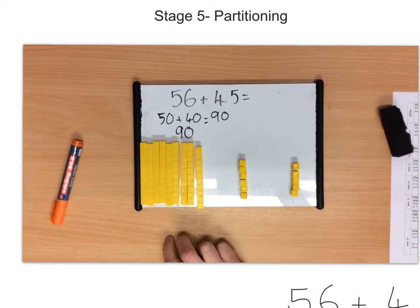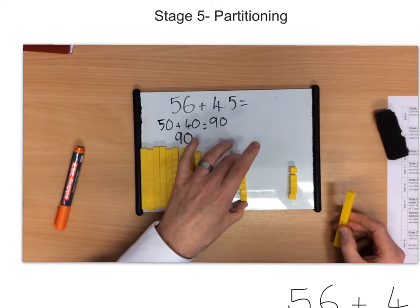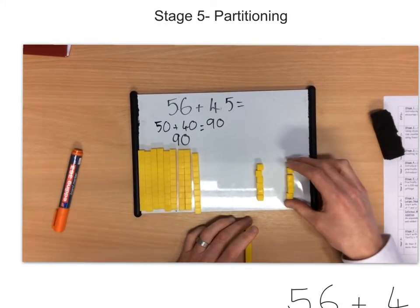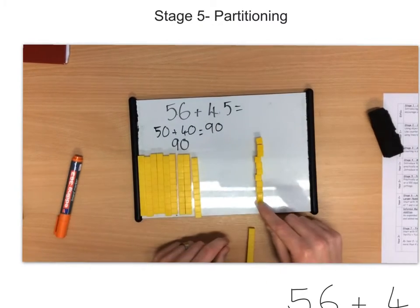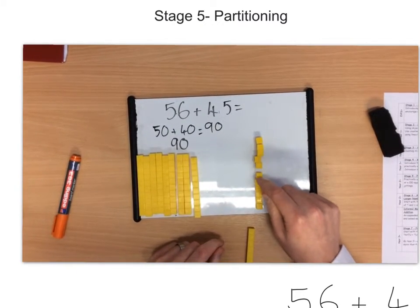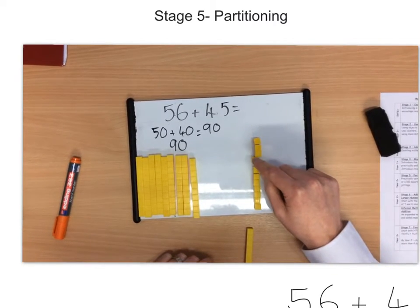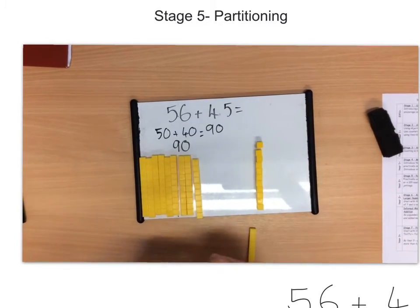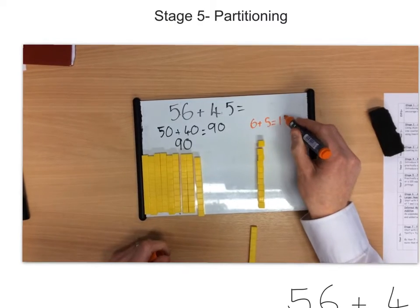What we always want to do is when we're adding numbers together, we want to try and work towards our multiples of 10. That always helps. So, if I get to my little cubes here, I know I've got 1, 2, 3, 4, 5, 6. So, really, I should have started at 6 and counted on, 7, 8, 9, 10, 11. Now, I know that 6 plus 5 equals 11.